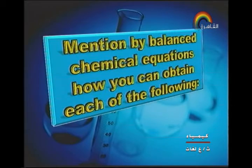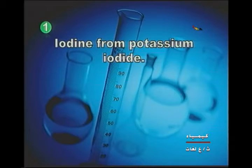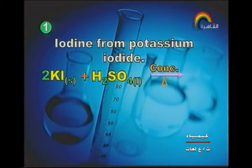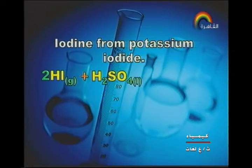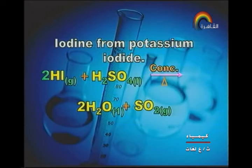Next type of question: mention the balanced equation — how can you obtain iodine from potassium iodide? According to the equations shown on screen: 2KI solid reacts with hot concentrated sulfuric acid giving potassium sulfate and hydrogen iodide gas. Then sulfuric acid oxidizes the hydrogen iodide gas into iodine and is reduced into water and sulfur dioxide gas.